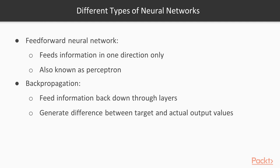Now we will learn about the different types of neural networks. The simplest type is known as a feedforward neural network. It feeds information in one direction only, from the front to the back. This type of network is also known as a perceptron.